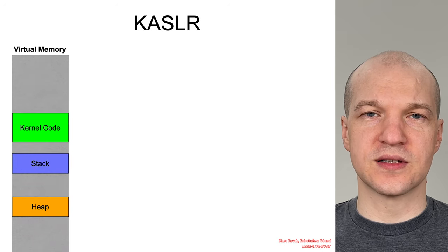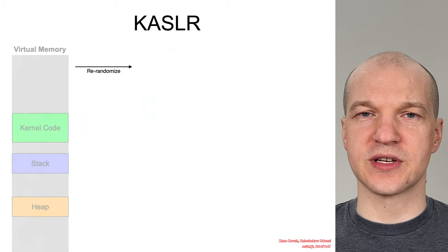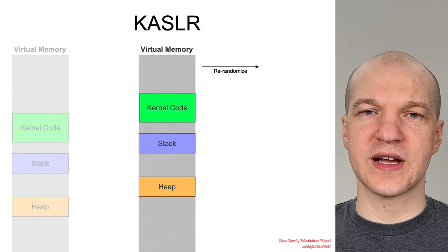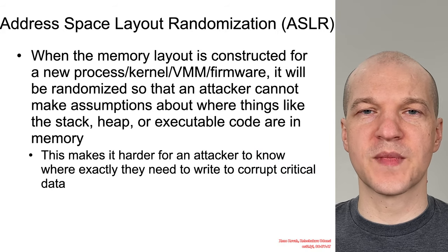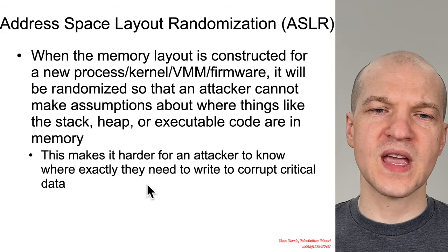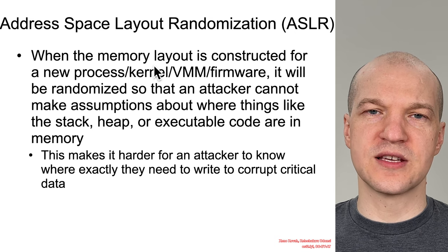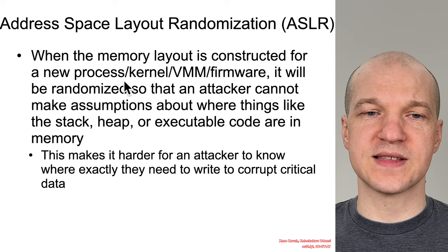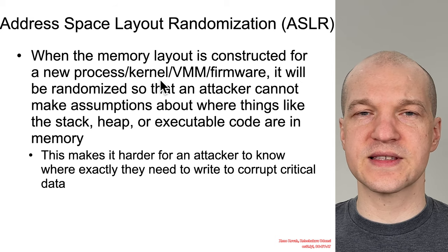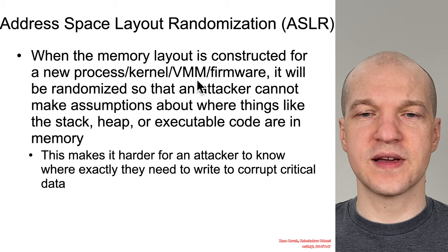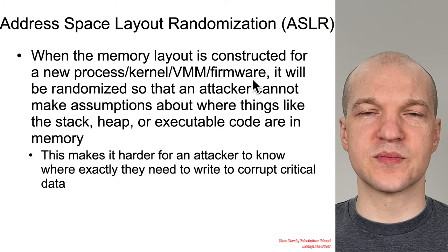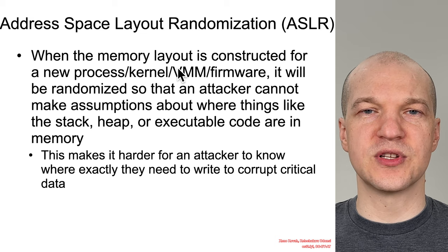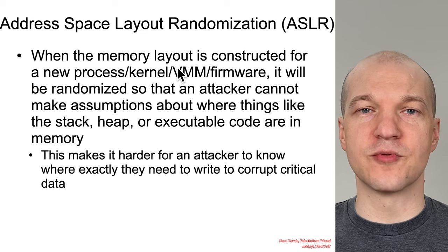The equivalent thing exists in kernel space for the actual randomization of the operating system kernel itself. ASLR can apply to user space, kernel space, firmware, and virtualization. The first thing responsible for construction of memory and the memory layout — whether that's the layout of an individual process, the OS kernel, the virtualization system, or the firmware — is responsible for having some option to randomize layout.